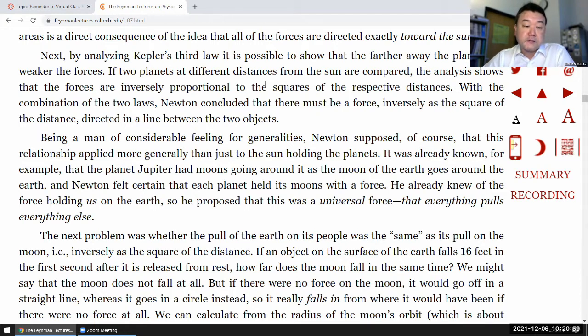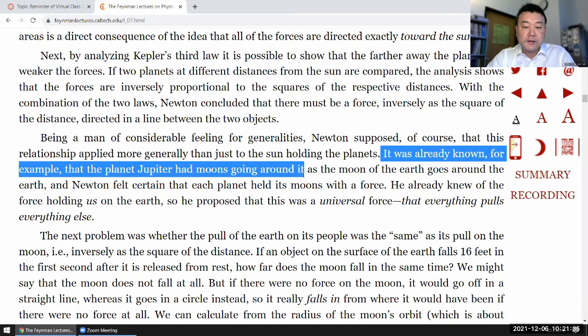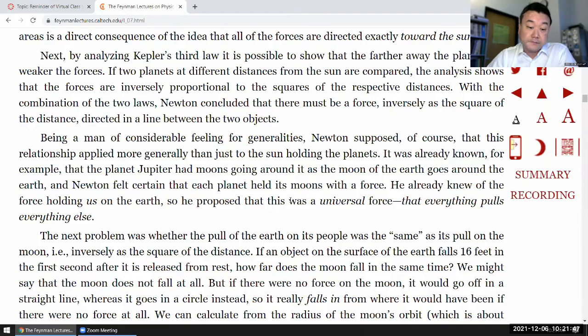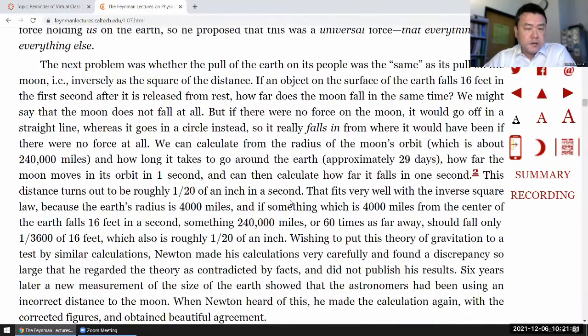Or back up of course, inversely as the square of the distance directed in a line between the two objects. Being a man of considerable feeling for generalities, Newton supposed, of course, that this relationship applied more generally than just to the sun holding the planet. It was already known, for example, that the planet Jupiter had the moons going around it as the moon of Earth goes around the Earth, and Newton felt certain that each planet held its moons with a force. He already knew of the force holding us on the Earth, so he proposed that this was a universal force, that everything holds everything else. This discovery, by the way, was by Galileo, and it was one of the discoveries that supported the heliocentric idea, heliocentric model, and refuted some of the objections to the heliocentric model.